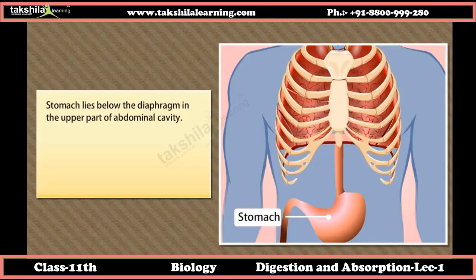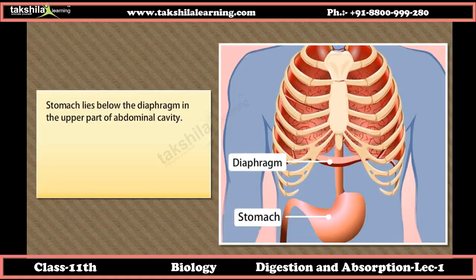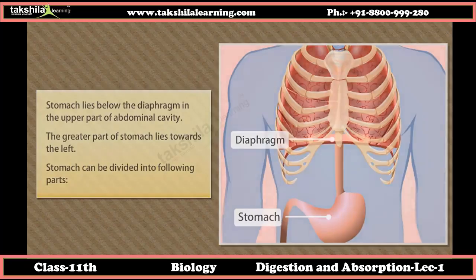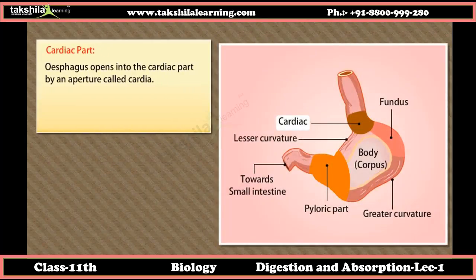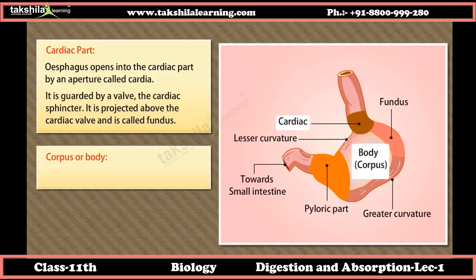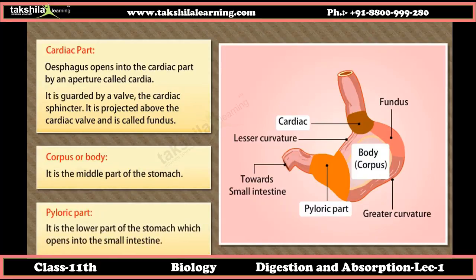The stomach lies below the diaphragm in the upper part of the abdominal cavity, with the greater part towards the left. The stomach is divided into the cardiac part, into which the esophagus opens through an aperture called the cardia guarded by the cardiac sphincter; the fundus, projected above the cardiac valve; the corpus or body, the middle part; and the pyloric part, which opens into the small intestine.